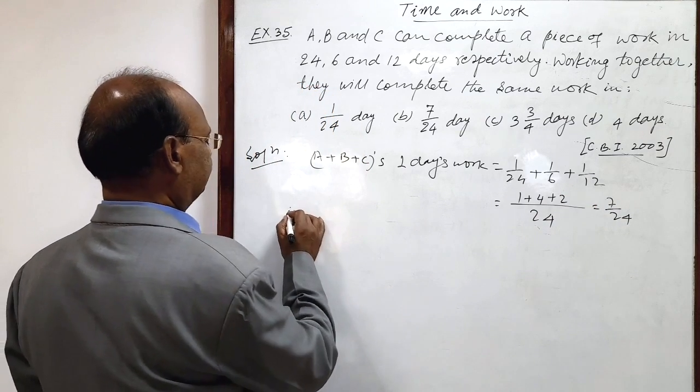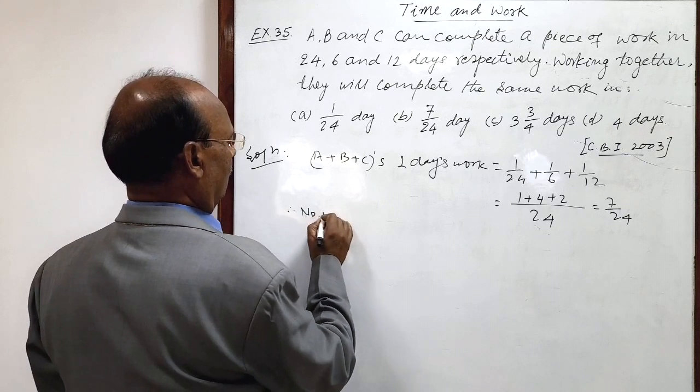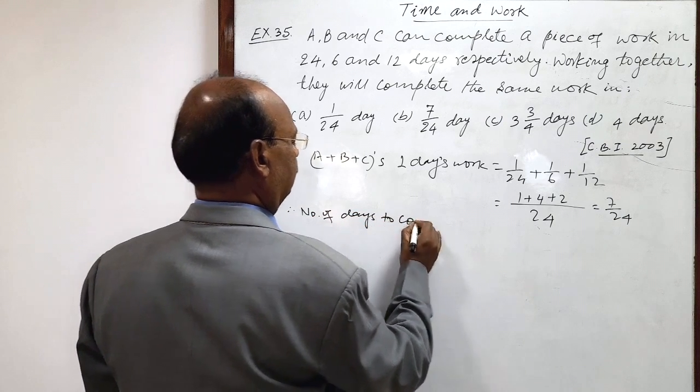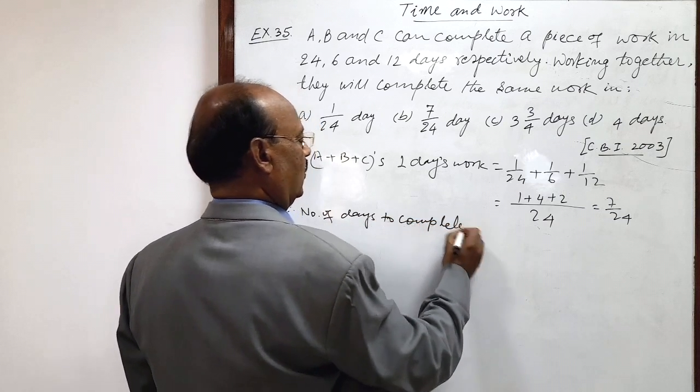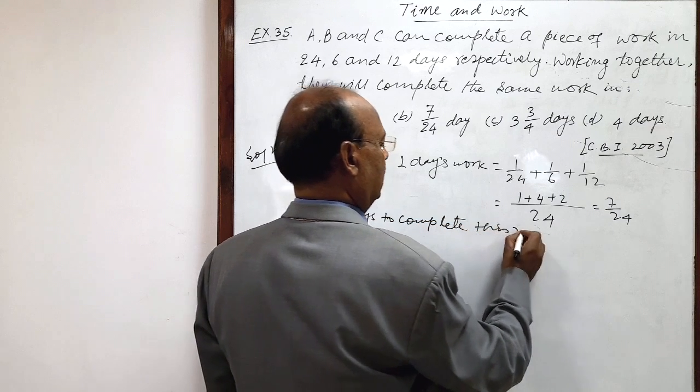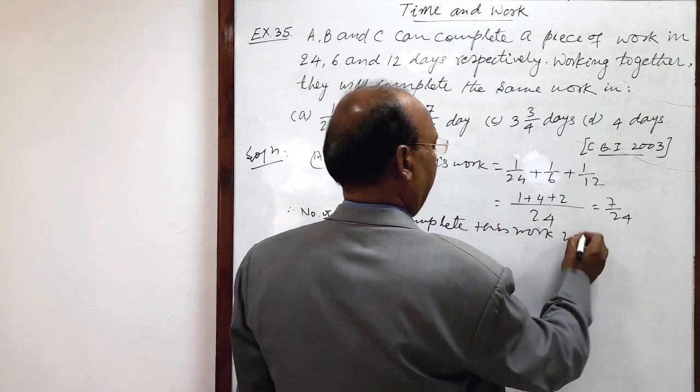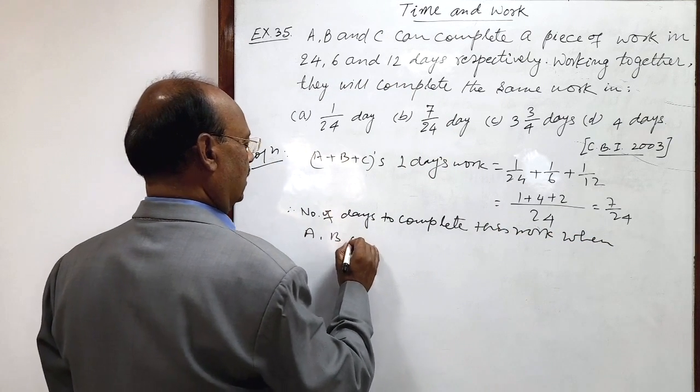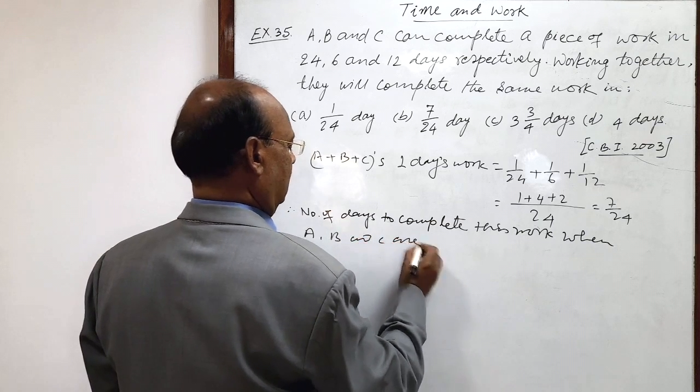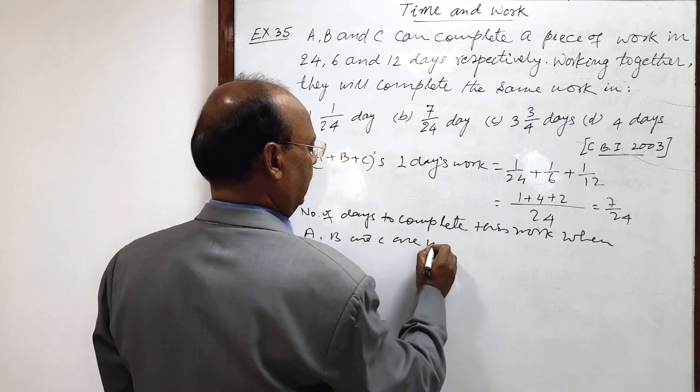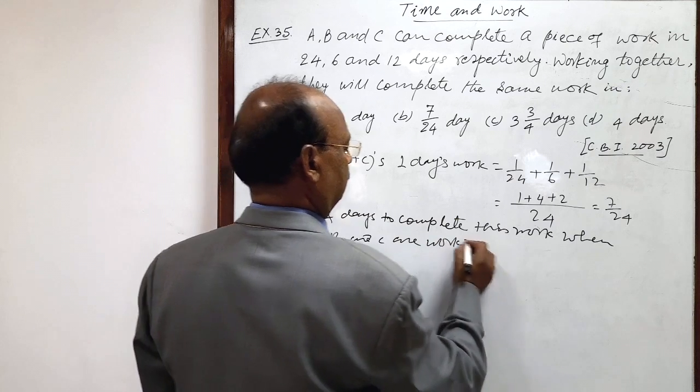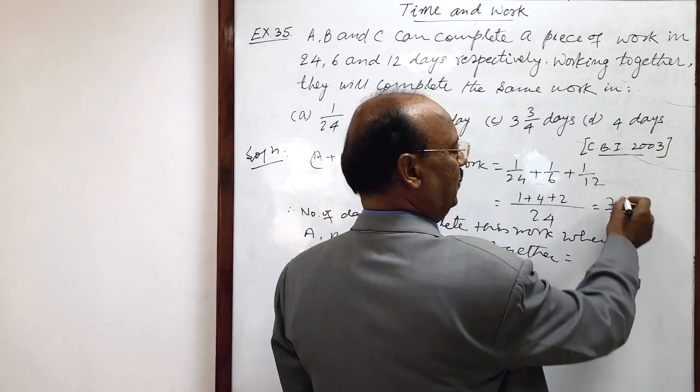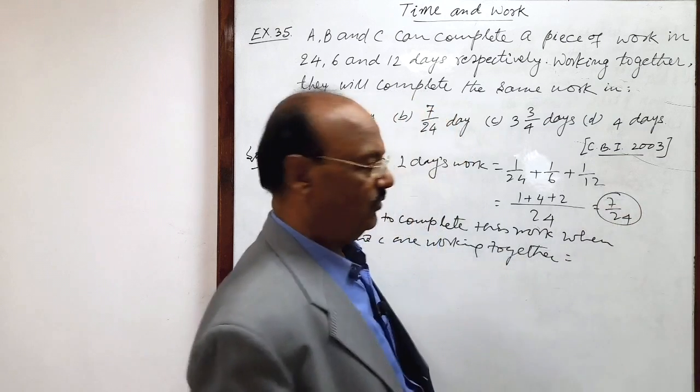Therefore, number of days to complete this work when A, B and C are working together is equal to simply reciprocal of amount of work done.